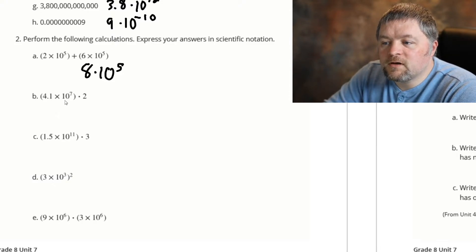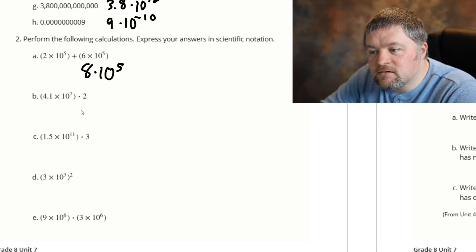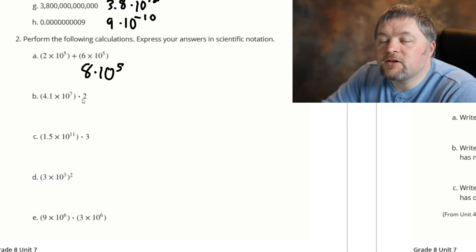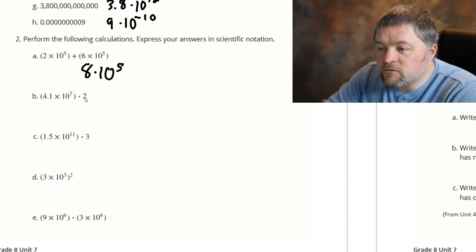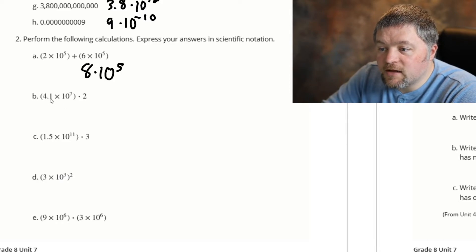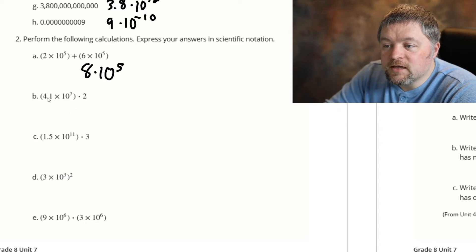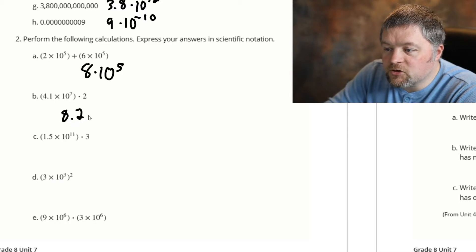4.1 times 10 to the 7, times 2. We can use the commutative property of multiplication to move this 2 around, so this would be the same as 2 times 4.1 times 10 to the 7. Then all we have to do is multiply 4.1 times 2, which is 8.2 times 10 to the power of 7.